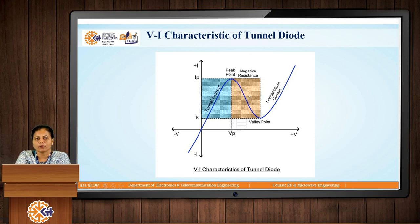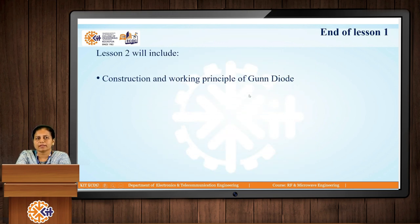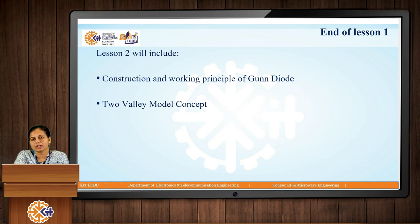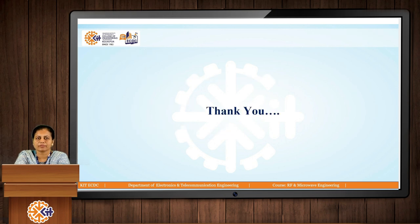I hope you have all understood the Tunnel Diode concept. In the next lesson, we will discuss the Gunn Diode — its construction and working principle, the two-valley model concept, and the VI characteristic of the Gunn Diode. Thank you.